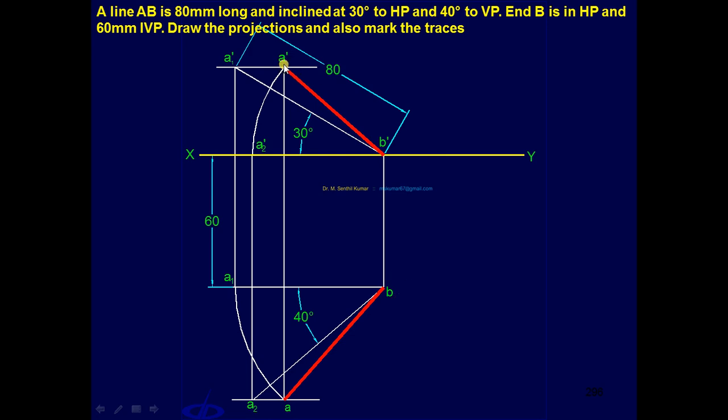Again I repeat: to get the horizontal trace, you have to extend the line front view A'B' till it cuts XY. But incidentally B' is on XY, that means that point itself is H'. So consider B' itself as H', draw a projector.